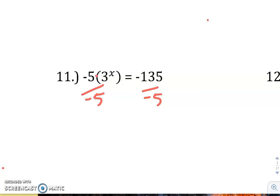Whenever it's right up against, there might not be that operation of multiplication, you just need to know it's multiplication. So divided by negative 5, we get 3 to the x equals 27. Negative divided by negative is a positive.